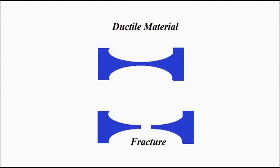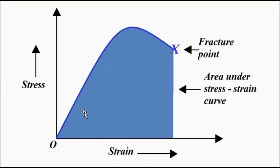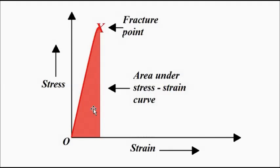Just as temperature affects tensile strength and ductility, it also affects toughness. At lower temperatures, toughness decreases and the material becomes more brittle. At higher temperatures, toughness increases and the material becomes more ductile. So more area under the stress-strain curve means a more ductile material with more toughness; less area means lesser ductile properties and less toughness.